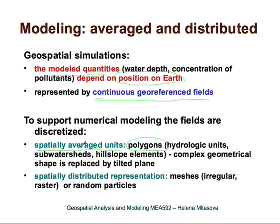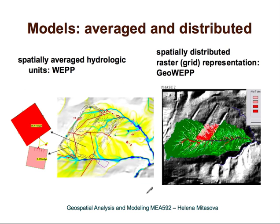When working with spatially averaged units, we replace complex geometrical shapes with a simplified shape with averaged properties. We can also discretize continuous fields using spatially distributed representation, in which case we use meshes — these can be irregular, such as TINs, or regular meshes such as rasters. Spatially distributed representation can also be done using discrete random particles.